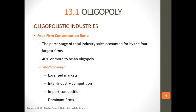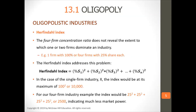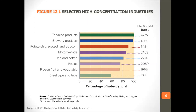Looking at oligopolistic industries: the four-firm concentration ratio is the percentage of total industry sales accounted for by the four largest firms — 40% or more qualifies as an oligopoly. The Herfindahl index shows how oligopolistic the industry is. Tobacco products have the highest Herfindahl index, then brewery products, then potato chip, pretzel, and popcorn products.